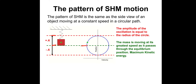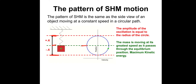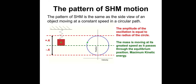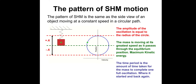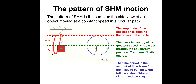At the amplitude — the top and bottom extremes — the mass is changing direction, so the speed at that point is actually zero. What is greatest at that point is the acceleration, as the mass is about to change direction. The time period is the amount of time taken for the mass to complete one full oscillation — from the top position, all the way down, all the way back up.